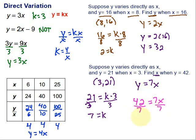Divide by 7. Divide by 7. I end up with 6 equals x. So when y is 42, x is equal to 6.